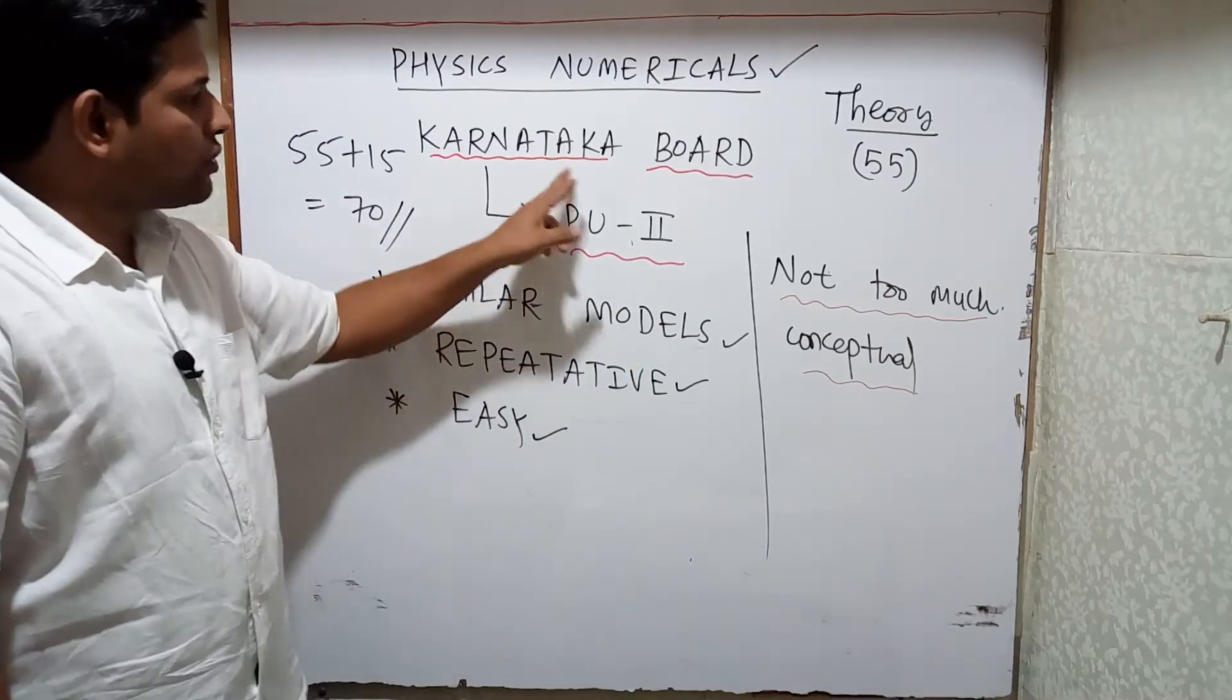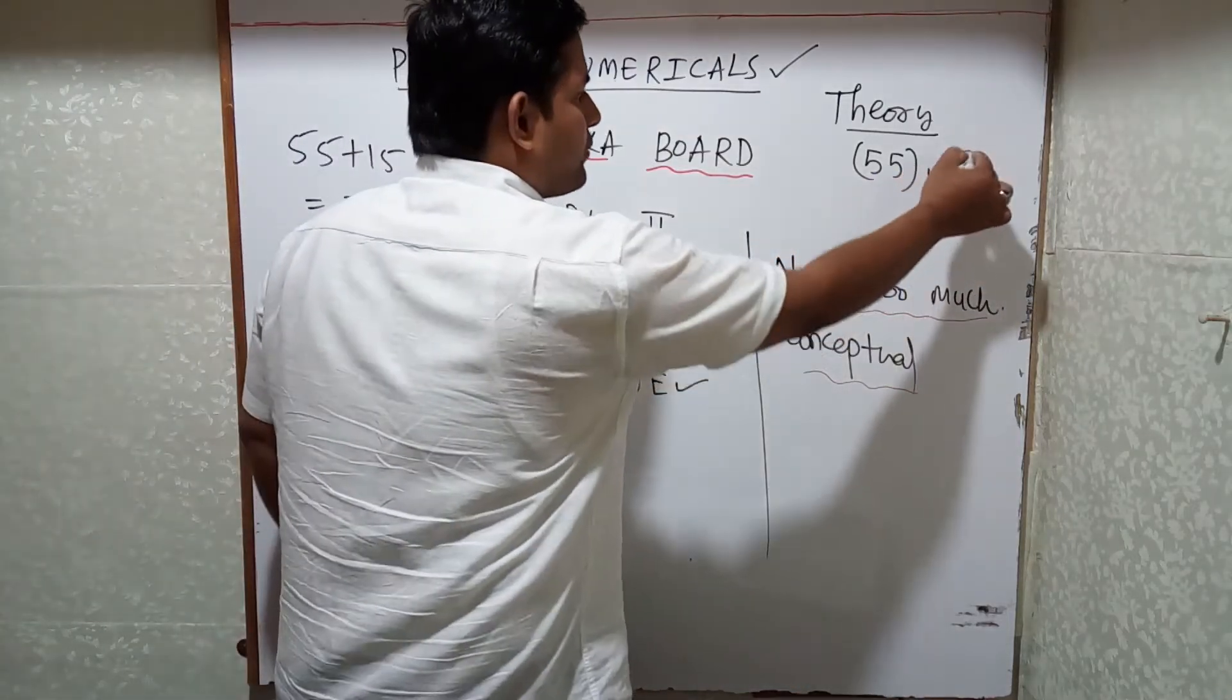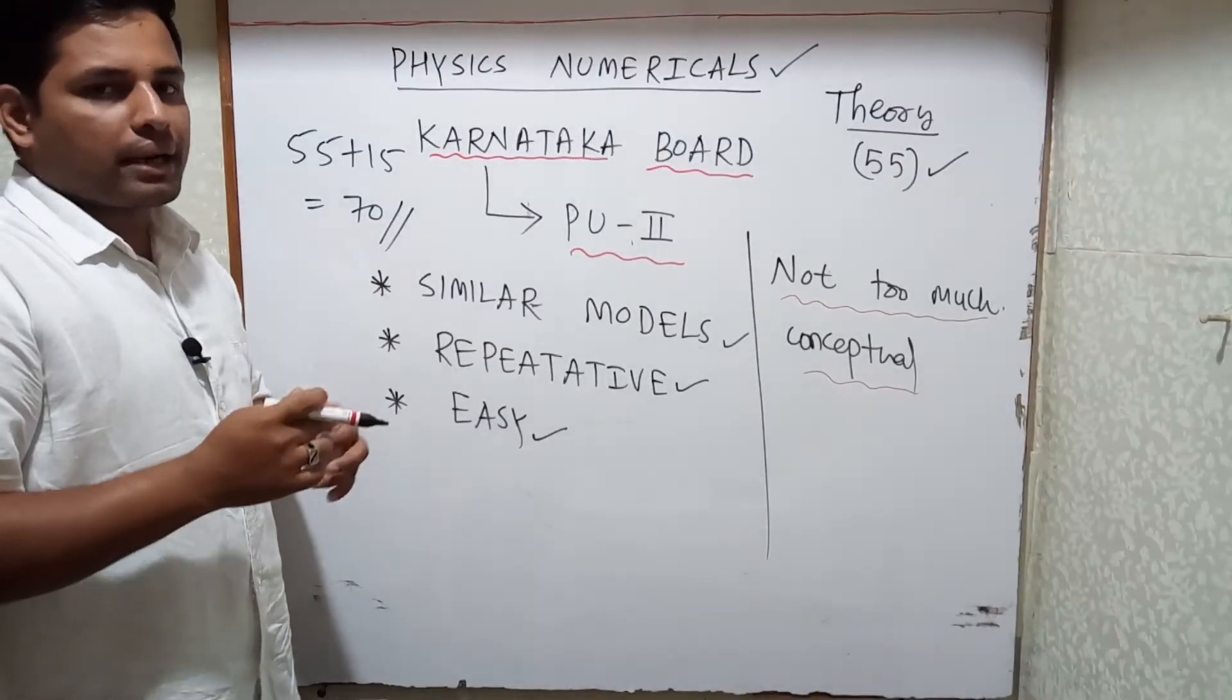Related to Karnataka Board PU-II, usually students say the theory 55 marks, whatever it is there, we'll do it sir. It's very easy, simple. We can practice and we can do that.